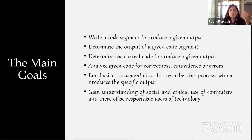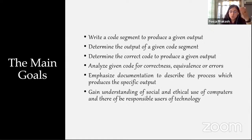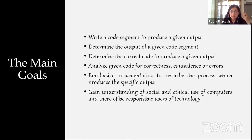You would also need to determine the output of a given code segment. In certain places you would be given a code segment and would have to analyze and go through the entire process to see what the expected output would be. Then, determine the correct code to produce a given output — you may have choices and need to identify which code segment would give you the result mentioned.